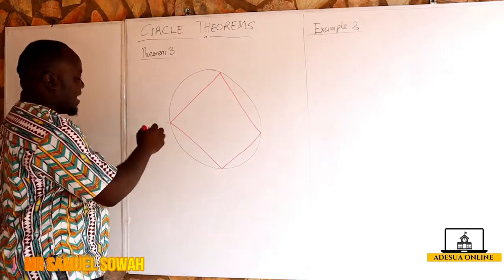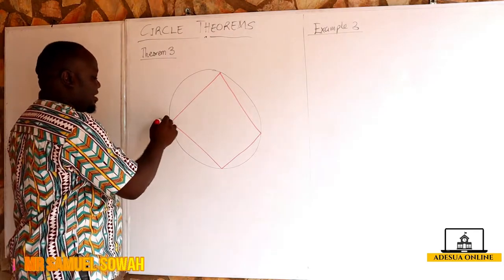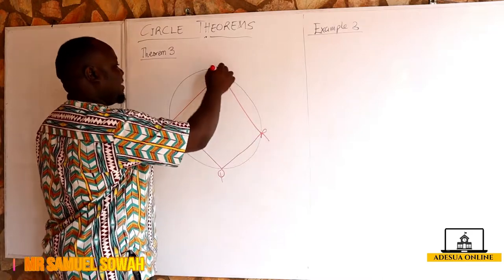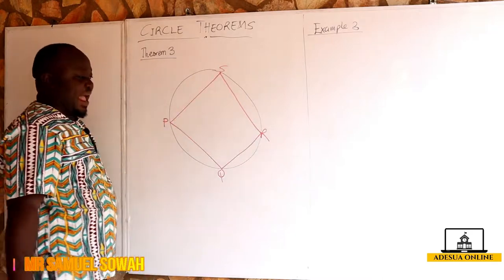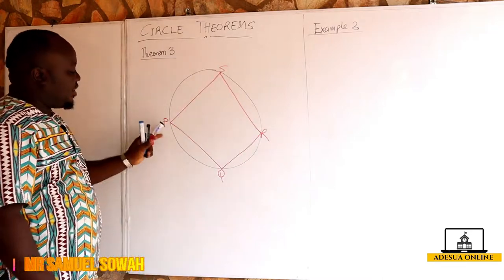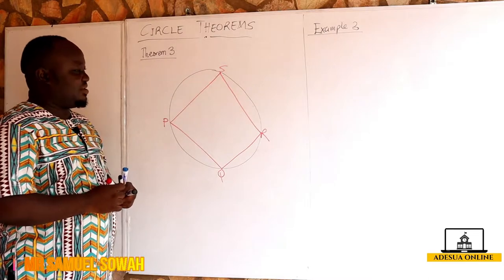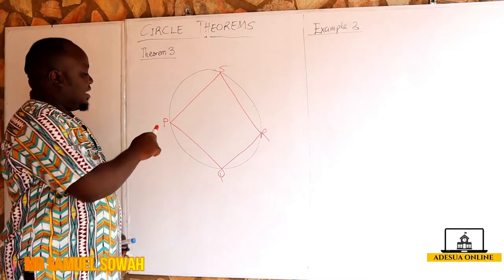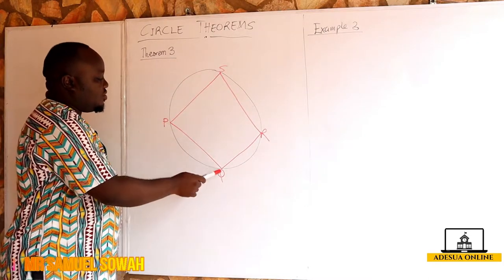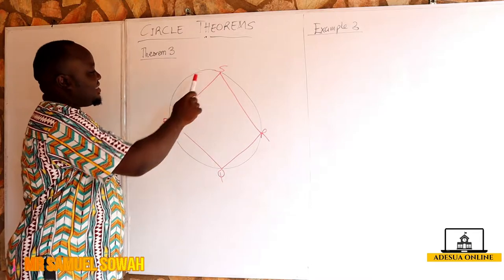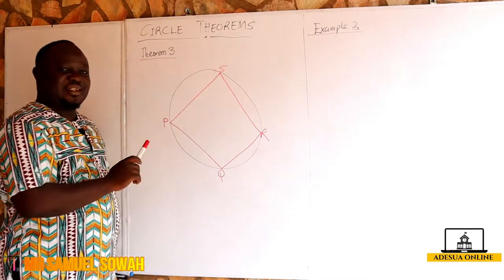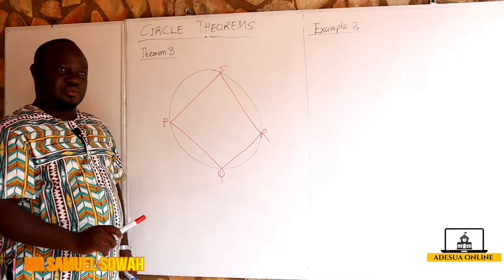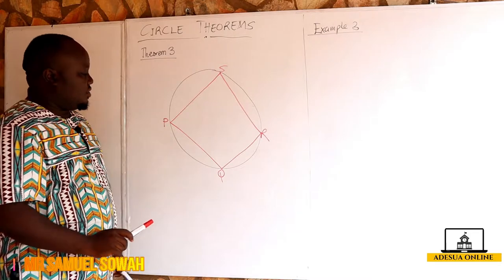Assuming I have PQRS, I can say that PQRS is a cyclic quadrilateral. Why? Because the vertices P, Q, R, and S are touching the circumference of the circle. Note that.